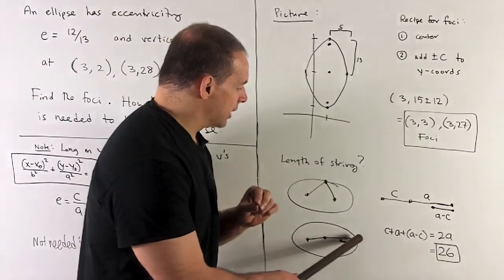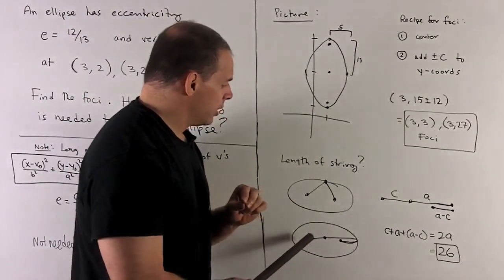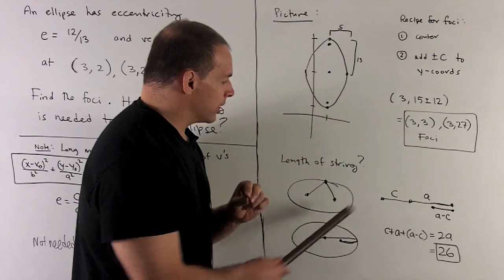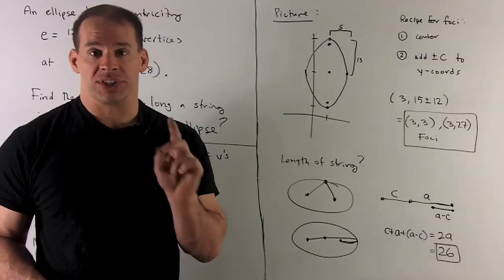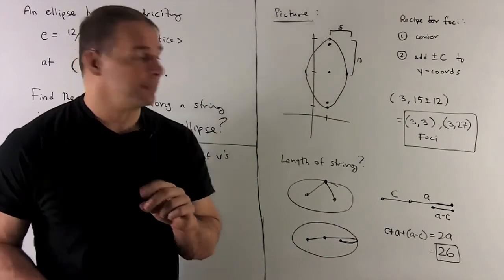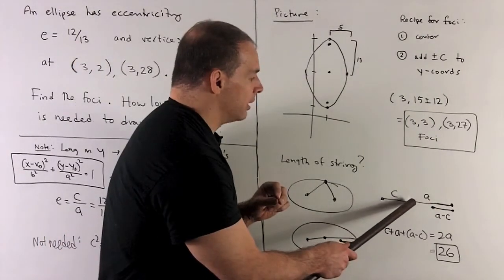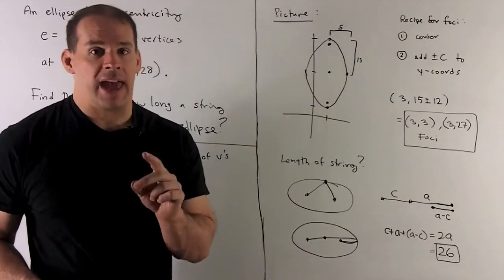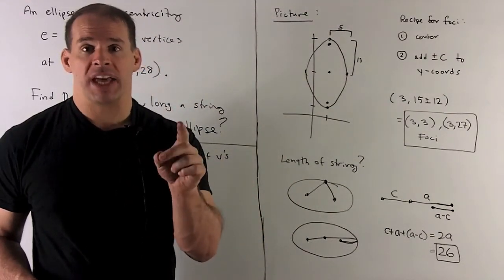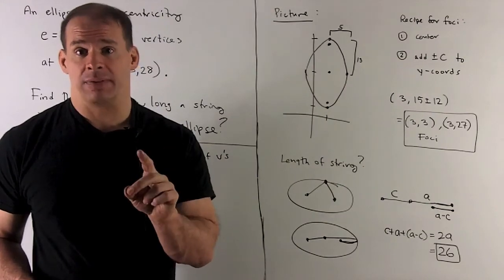If I'm going out to here and then back, we're starting at one focus, going to the center. Distance from focus to center, that's c. Going to go from center to vertex, that's going to be given by a. And then we're going to come back from the vertex to the second focus.